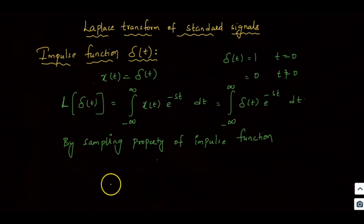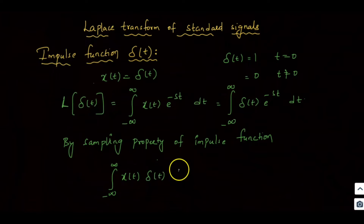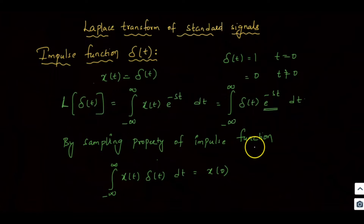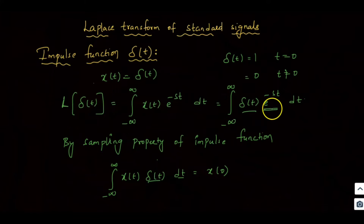The sampling property of the impulse function states that the integral from minus infinity to infinity of x(t) times δ(t) dt is equal to x(0). Here, x(t) is replaced by e^(−st), and δ(t) and dt remain the same.